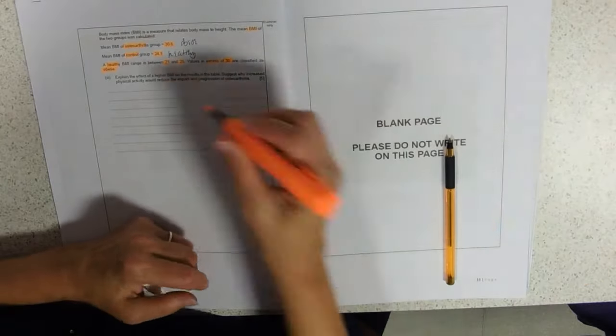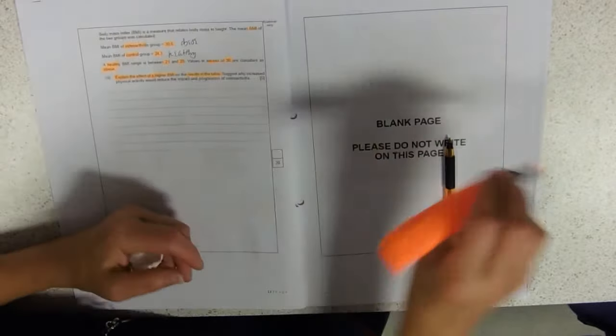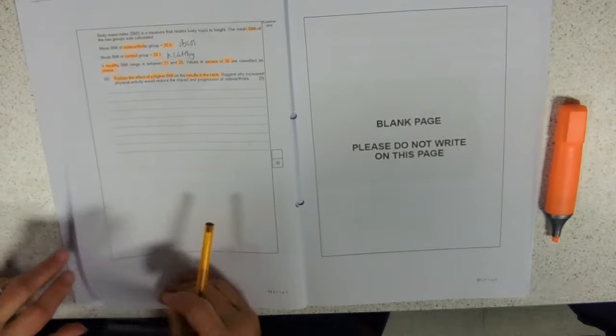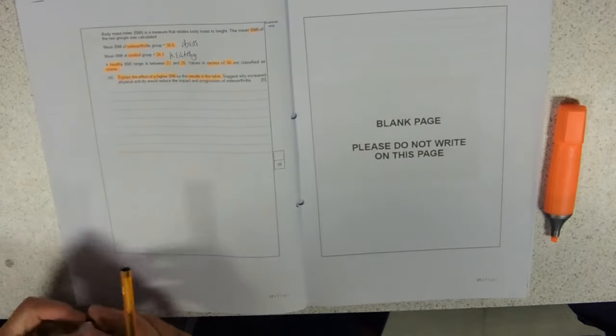Explain the effect of higher BMI on the results in the table. What table are we talking about? The one before. So it takes them longer to climb the stairs and they can't generate as much force.